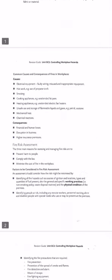Now I'm going to talk about the common causes and consequences of fire in every workplace. The causes of fire include: number one, electrical equipment — faulty wiring, misuse, and inappropriate equipment. Electrical equipment can cause fire because of misuse or because the wrong voltage is applied.